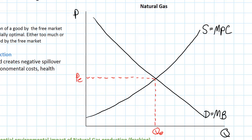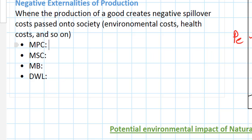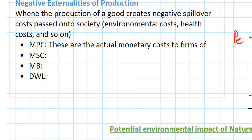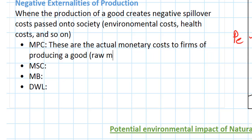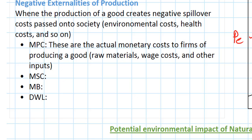We have what we call our market equilibrium without consideration of any of the costs passed on to society. This quantity and price is what will be determined by the free market for natural gas — gas producers will produce gas based on the level of demand and based on their private costs of production. So marginal benefit and marginal private cost determine the equilibrium quantity and price. Marginal private cost refers to the actual monetary costs to firms of producing a good — raw materials, wages, and other inputs.